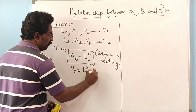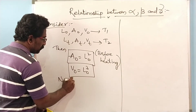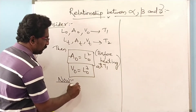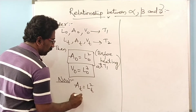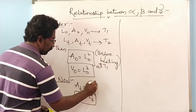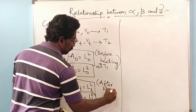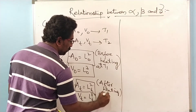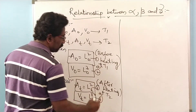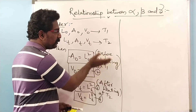Similarly, V-naught equals L-naught cubed, which is the initial volume of the cube before heating. After heating to temperature T2, the area becomes A-T and the volume becomes V-T. These are equations 1 through 4 — the four parameters of the cube with respect to temperature, both before and after heating.